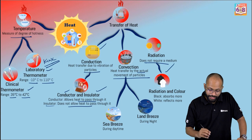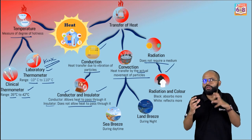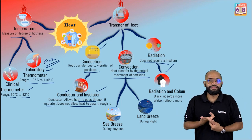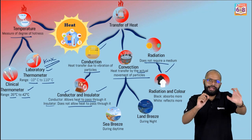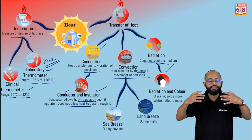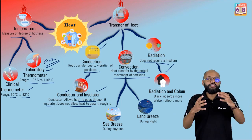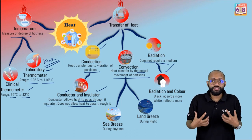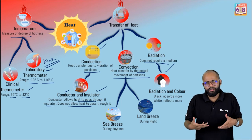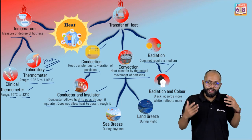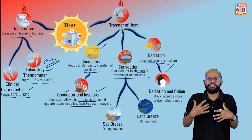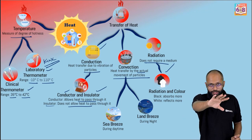Radiation and color: darker colors absorb more light and reflect less, meaning they absorb more energy and gain more heat. White or lighter colors reflect more light, so they don't absorb as much energy. That's why in summer we wear light-colored clothes, and in winter we tend to wear darker clothes to absorb more sun rays and get warmth.